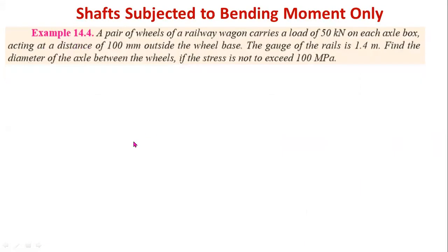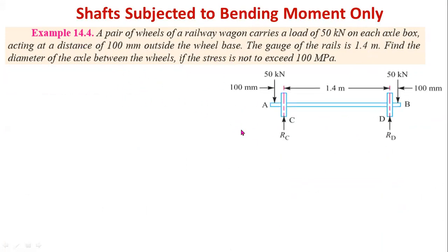Now for the example problem: a pair of wheels of a railway wagon carries a load of 50 kN on each axle box, each acting at a distance of 100 mm outside the wheel base. The gauge of the rails is 1.4 meters. Find the diameter of the axle between the wheels if the stress is not to exceed 100 MPa.